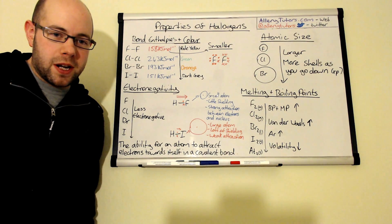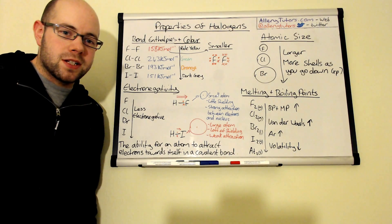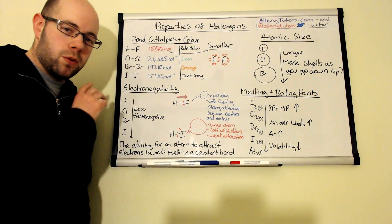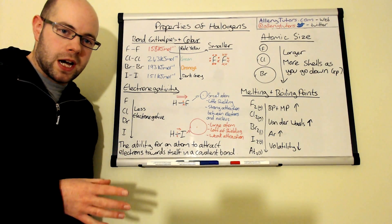So we're going to start with bond enthalpies first and as you can see I've drawn a table on the board and we've got our halogens which go down, they always go around as a pair so we call them diatomic molecules.